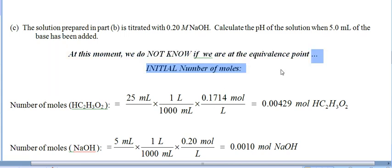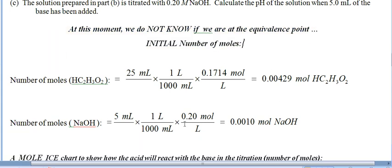Even more important is making sure that you realize when you're doing a titration, you must convert your volumes and molarities into moles and compare the two. So what we need to do first is find out how many total moles of the acetic acid we have. We're going to take our volume, 25 milliliters, multiply it times the molarity, which is 0.1714 molarity, to get our total number of moles, which in this case is 0.00429 moles of acetic acid.